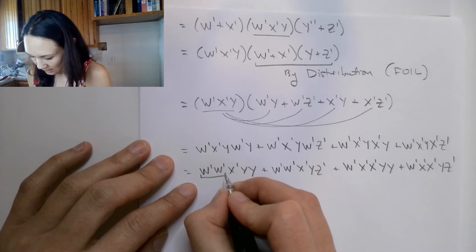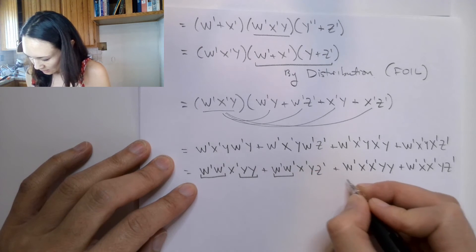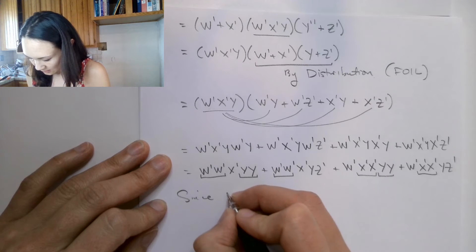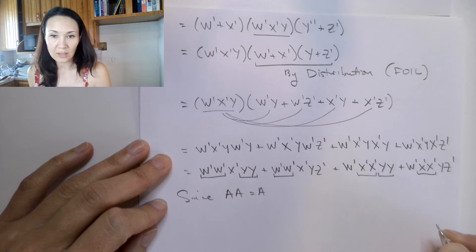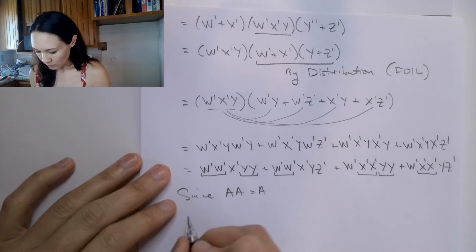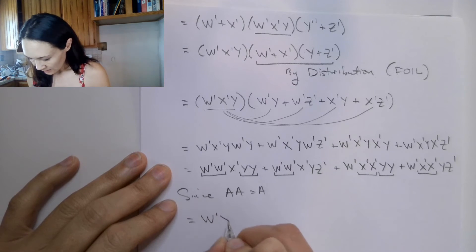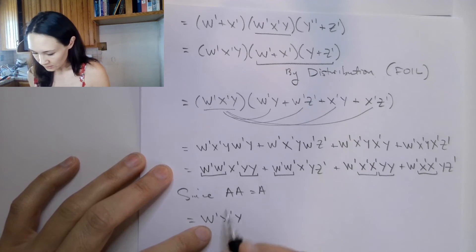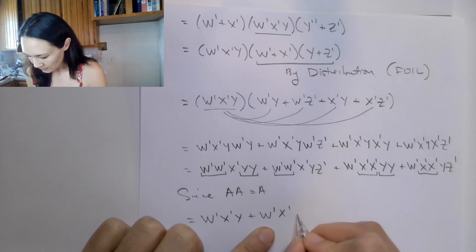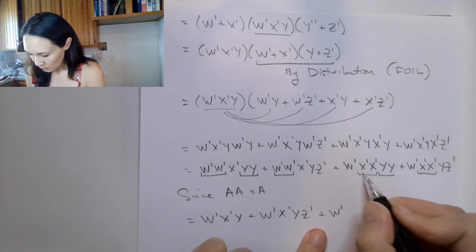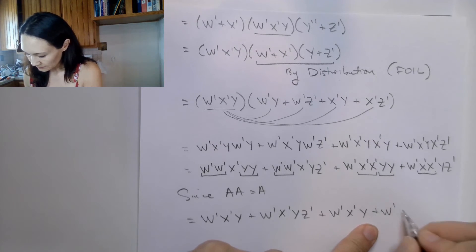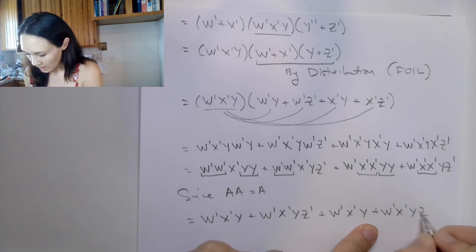We see duplicate factors in each term. Since a AND a = a, we don't need two copies ANDed together — we replace them with one. So everywhere we see duplicate groupings, we simplify: the first term becomes w'·x'·y, the second becomes w'·x'·y·z', the third becomes w'·x'·y, and the fourth becomes w'·x'·y·z'.